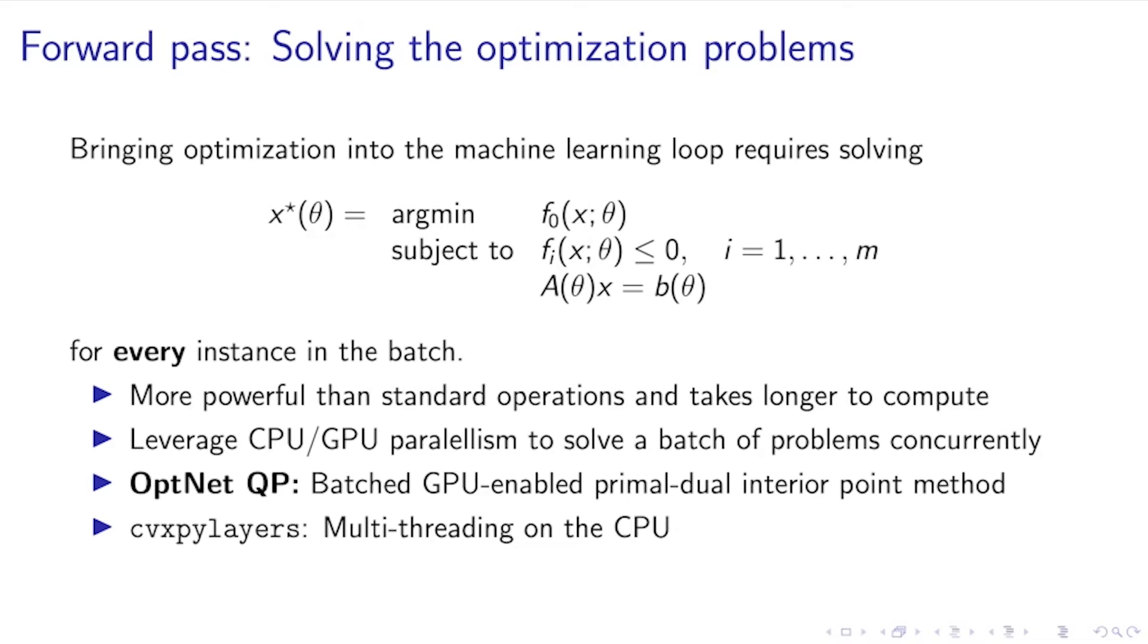This happens for every instance in your batch. This poses an implementation challenge because this operation is much more powerful and expressive than standard operations, and it's also much more computationally expensive. Because of this, if you're not careful while implementing or using these layers, they can very quickly become a bottleneck in the computation of your model.